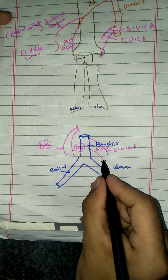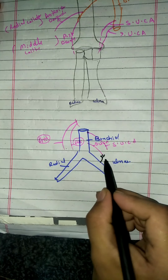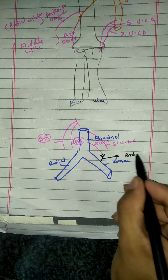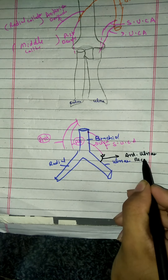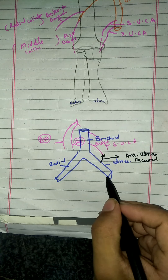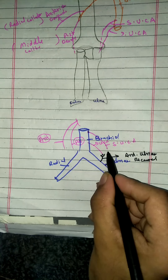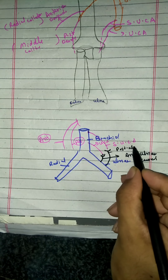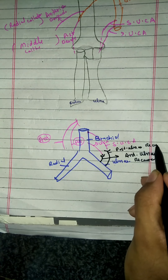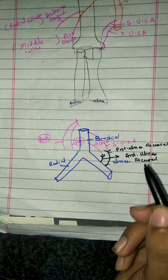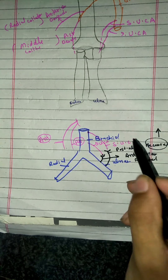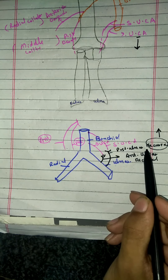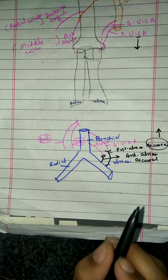From the ulnar artery, a branch arises which anastomoses with the inferior ulnar collateral artery, named the anterior ulnar recurrent artery. From the ulnar artery, one more branch originates and anastomoses with the superior ulnar collateral artery, known as the posterior ulnar recurrent artery. It's called recurrent because it goes upward, and collateral because it goes downward.